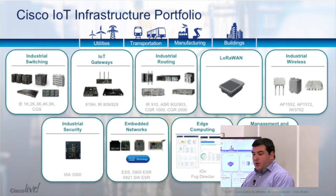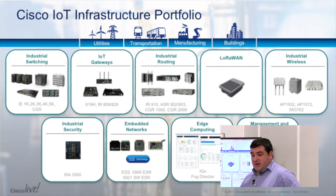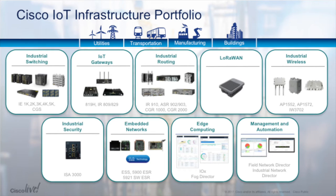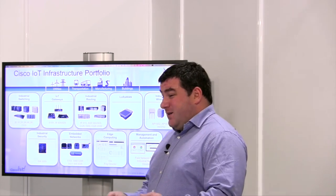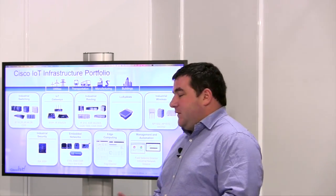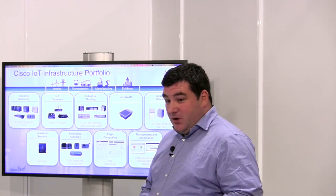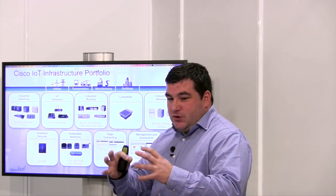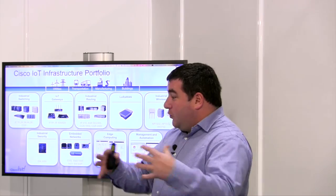We have embedded network products — PC/104 form factor switches and routers sold to people who want to build a bigger system and embed Cisco technology in their own product. Think about military, intelligence, and special forces use cases. We also have a version of IOS that we sell as a software package for the ESR 1521. And last but not least, we have edge computing platforms — that's IOx — and management and automation tools, including Field Network Director for utility networks and Industrial Network Director for OT product management in manufacturing environments.